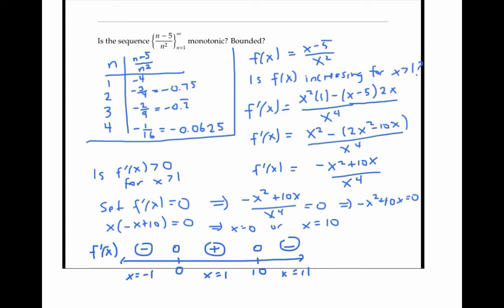In particular, f increases when x increases from one to 10 and then it decreases. And so the same thing is happening to our sequence. Therefore, the sequence is not monotonic.